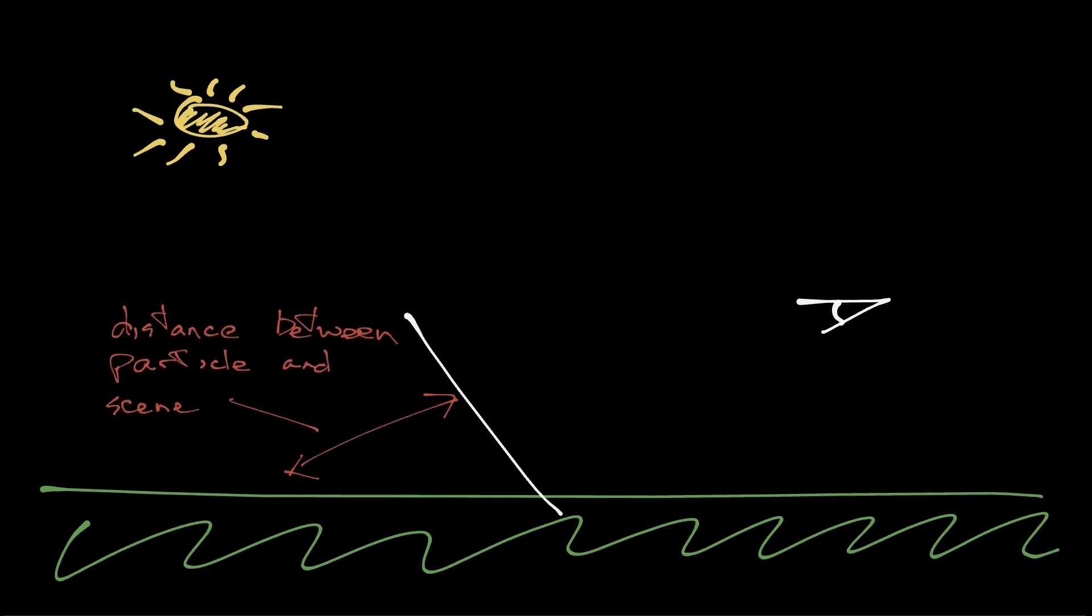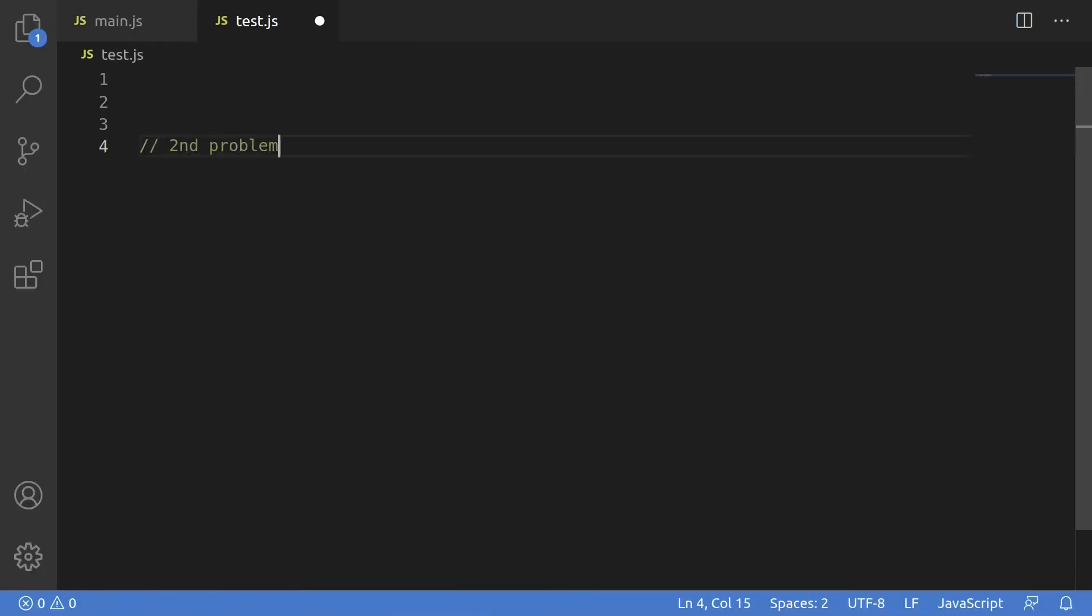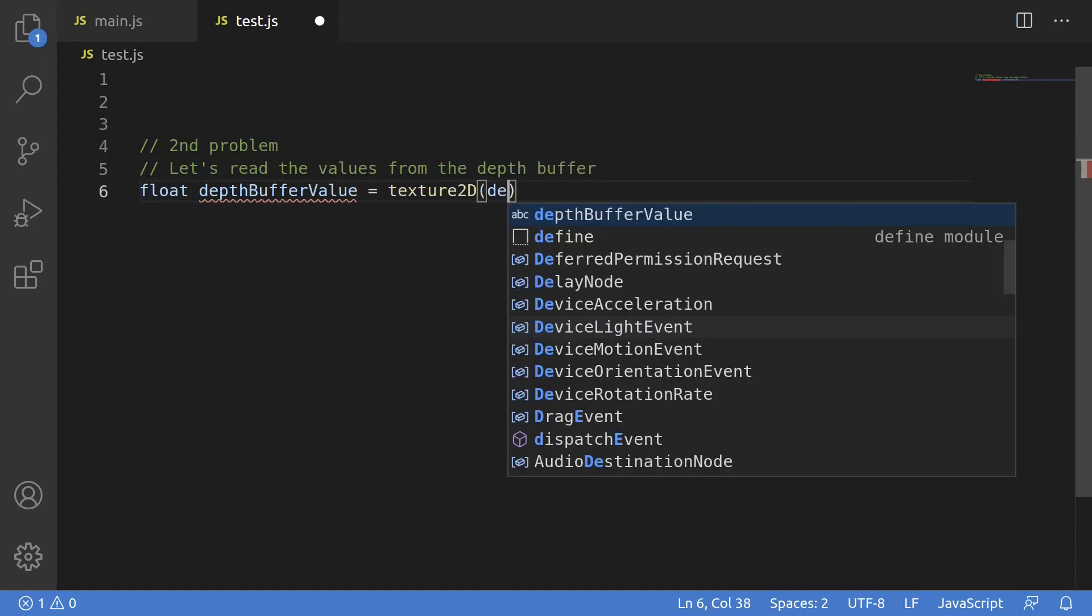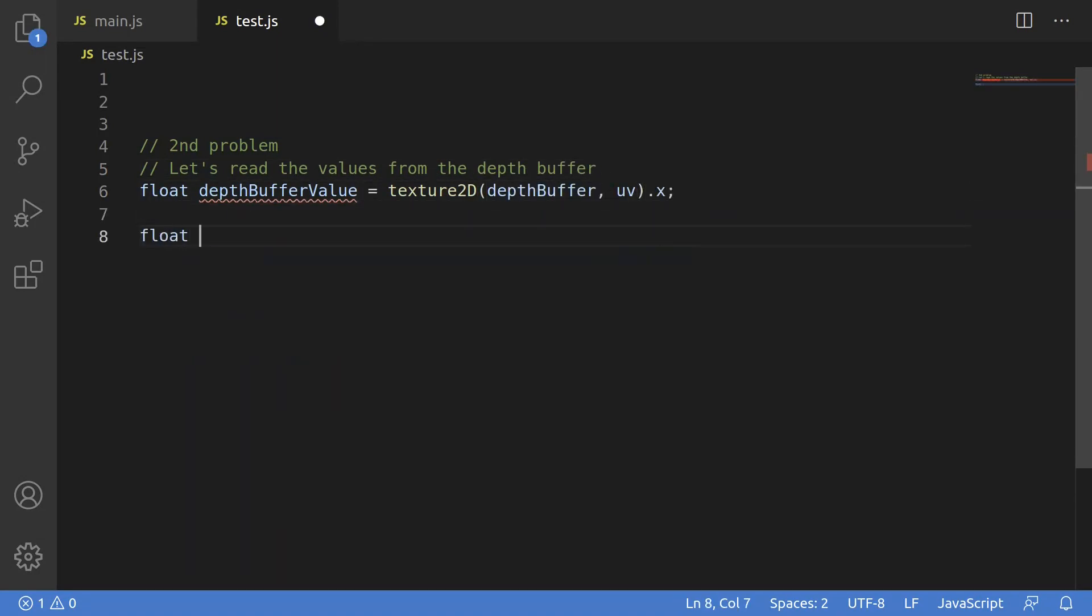The first is, in the fragment shader for the particle, you need to access a few things. You need the viewspace depth of the particle, and you need the actual depth of the scene behind it. This is so you can fade things out as the distance closes, as the distance between them gets smaller. The second problem is, we're probably just going to use the depth buffer, which is perfectly fine, but there's a small hitch. When you read from the depth buffer, the values aren't in viewspace, so they'll need to be transformed.